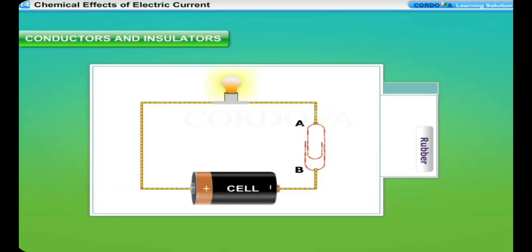Materials that do not allow electricity to flow through them easily are called insulators. Rubber, plastic, wood and glass are all insulators. Insulators are used to protect us from the dangerous effects of electricity. The plastic coating that you see on tools used by electricians is an insulating material.